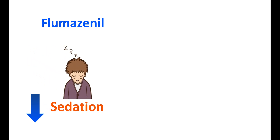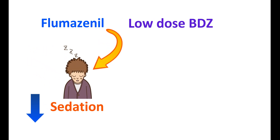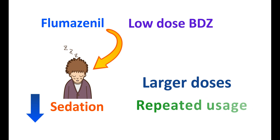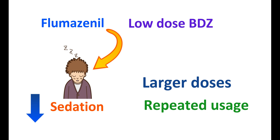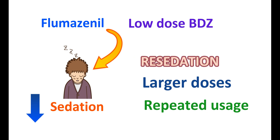Flumazenil is used to control the sedation produced by Benzodiazepines. A low dose of Benzodiazepines can produce sedation which can be reversed by Flumazenil. However, when Benzodiazepines are used at larger doses or by repeated uses, the sedative effect is more pronounced and long-lasting. In such cases, re-sedation can be observed even after use of Flumazenil. Since Flumazenil has a half-life of around 50 minutes, it has a short duration of action. In such people, Flumazenil can be re-administered after a 20-minute gap.